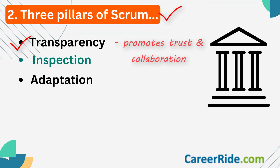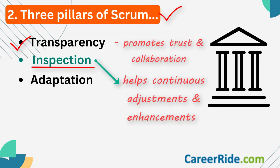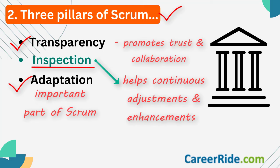The second important pillar is inspection, which means consistent evaluation and review of the progress and the product. This helps the team make continuous adjustments and improvements to its approach, and it is these incremental enhancements that ultimately lead to the success of the project. The third pillar is adaptation. In conjunction with inspection, it makes the team adjust their strategy and approach to reach the final destination. Adaptability allows it to correct its actions wherever and whenever required, and these continuous adjustments ultimately lead to a successful project and higher customer satisfaction.